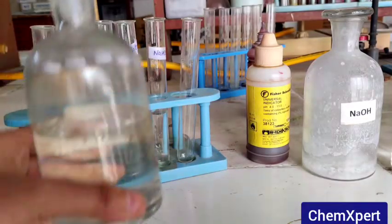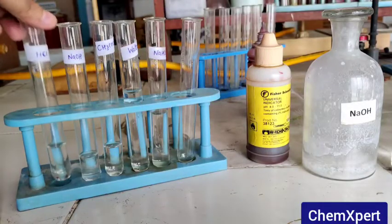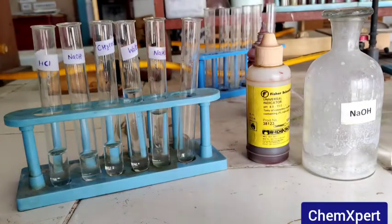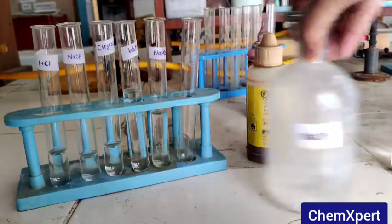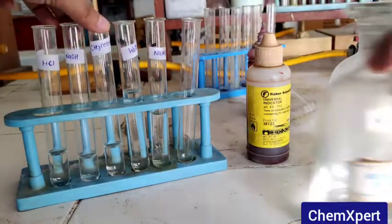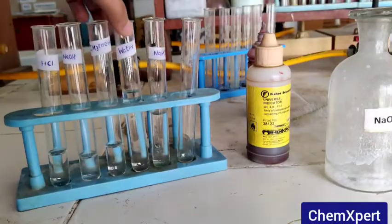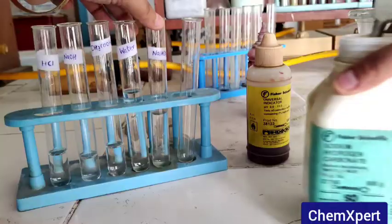We have taken five test tubes and in each test tube we have taken a separate sample. In the first one we have taken HCl, in the second test tube we have taken NaOH, and in the third test tube we have taken acetic acid, that is CH3COOH.